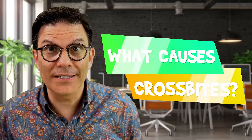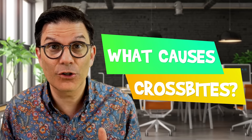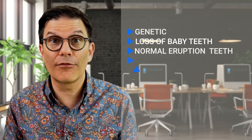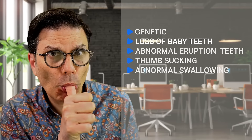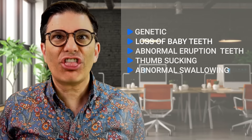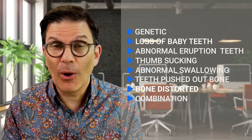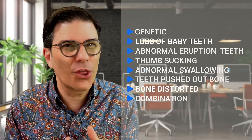What causes crossbite? There are multiple reasons for having a crossbite. It can be genetic, it can be a delayed loss of baby teeth, it can be abnormal eruption of permanent teeth, it can be thumb sucking or abnormal swallowing. Teeth can be pushed out of place, a bone can be distorted, or it can be a combination of all those things.